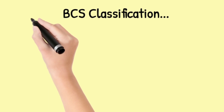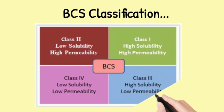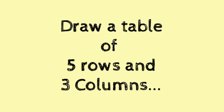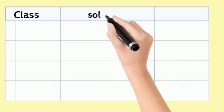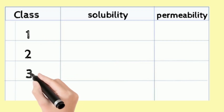Basically, drugs are classified into four classes in the BCS system on the basis of solubility and permeability — you can see the chart in front of you. To remember this, first draw a table with five rows and three columns. The first column heading is 'Class,' the second is 'Solubility,' and the third is 'Permeability.' Remember: solubility comes before permeability because in the process, solubility happens first. In the class column, write one, two, three, four.